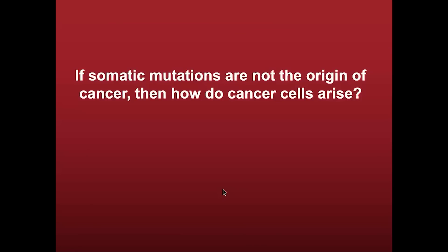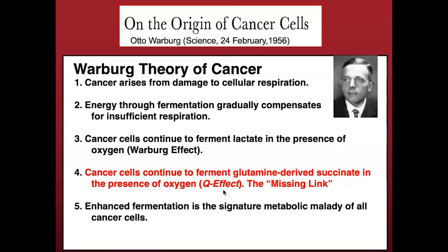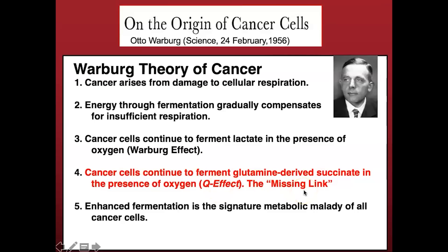So if somatic mutations are not the origin of cancer, how do we get cancer? This was described originally by the work of Otto Warburg back in the 1920s, 30s, and 40s. Cancers arise from the damage to cellular respiration. Energy through fermentation gradually compensates for insufficient respiration. Cancer cells continue to ferment lactic acid in the presence of oxygen — this is referred to as the Warburg effect. Cells should not continue to produce fermentation when oxygen is present; they should shift back to oxidative phosphorylation. The new findings that myself and Dr. Chinopoulos from Semmelweis University in Budapest found is the missing link in Warburg's central theory: cancer cells can also ferment succinic acid derived from glutamine. We call this the Q effect — Q is the single letter for glutamine — to distinguish it from the Warburg effect.